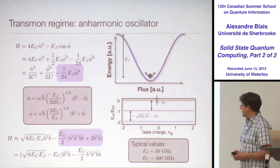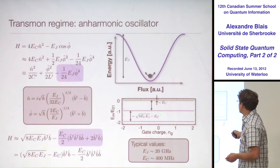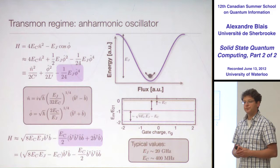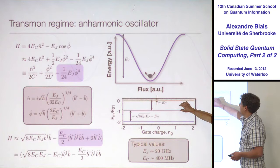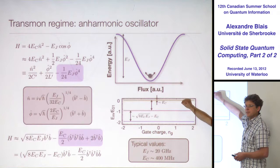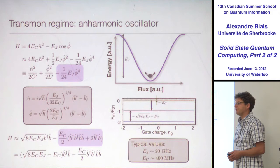The typical values are EJ around 20 GHz, EC around 400 MHz, which gives a transition in the range of 5 to 10 GHz. As a result, EC is a tiny fraction of this separation — something like 10 GHz versus 400 MHz. So the anharmonicity is very small, and a transmon is a weakly anharmonic oscillator.